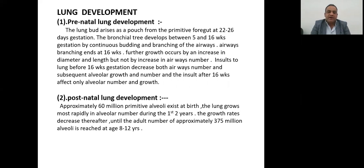Airway branching ends at 16 weeks of gestation. Further growth occurs by increase in diameter and length, but not by increase in airway number. An insult to the lung before 16 weeks of gestation will lead to decreased airway number and subsequent alveolar growth and number.